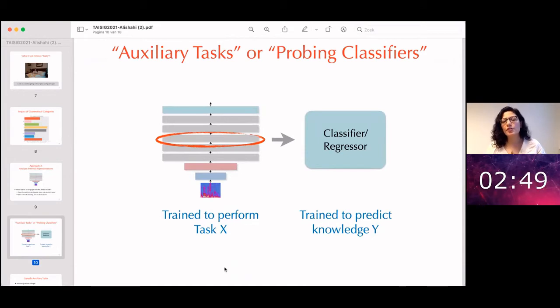You extract activations which is usually a vector of numbers, and then you pass this as input to a classifier or regressor that predicts knowledge y. And the argumentation here is that if you manage to train a classifier or regressor that predicts that your hypothesized knowledge with acceptable accuracy, then the original model must have learned something about that type of knowledge.